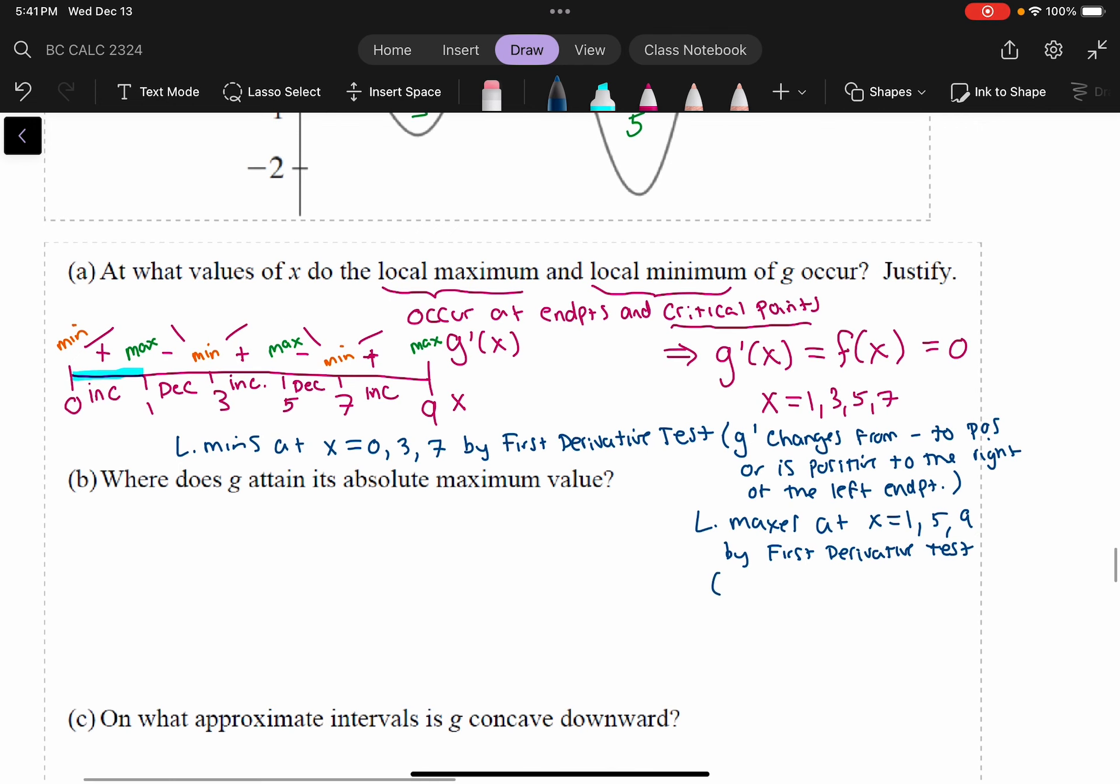So I'll just, again, to be consistent, right? So G prime changes from positive to negative. Or is positive to the left of a right-end point. Okay, so that's a good justification.